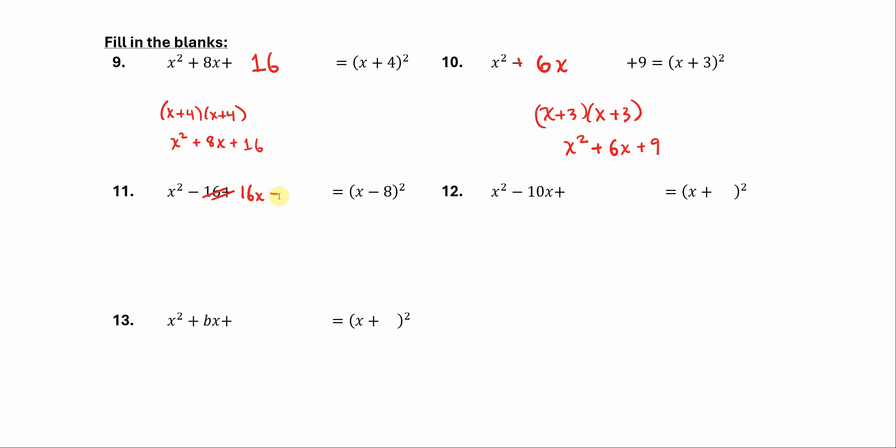All right, this problem here is a bit of a typo. This should say x squared minus 16x, so let's correct that first, and then plus the blank. All right, so when we multiply this out, we're going to get x minus 8 times x minus 8, and so that's going to give us x squared minus 16x, and the last term here is going to be negative 8 times negative 8, so that's going to give us plus 64.